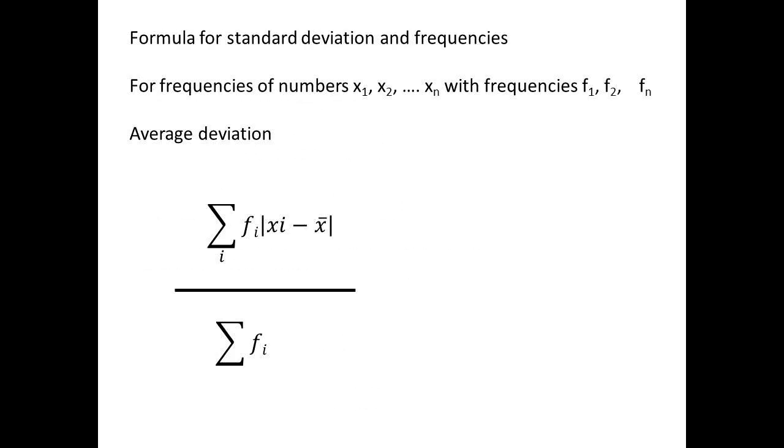For frequencies, when we are looking at groups of numbers, the average deviation is given by Σ fi|Xi - X̄| divided by the sum of the frequencies Σfi.